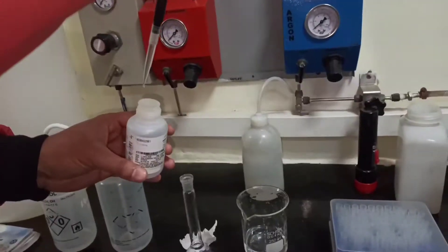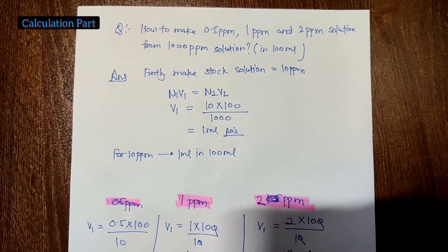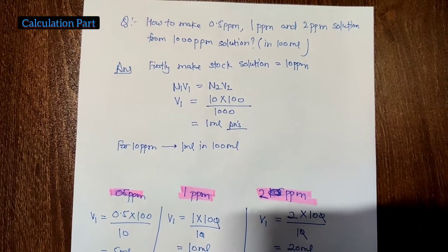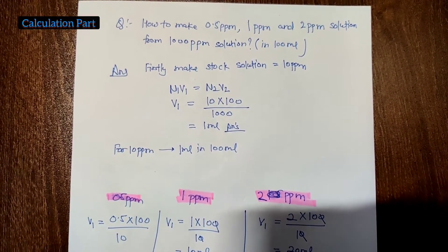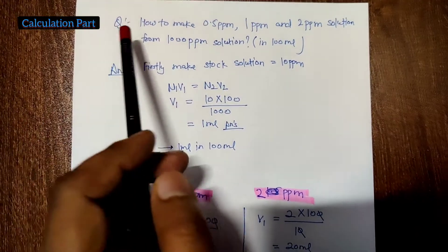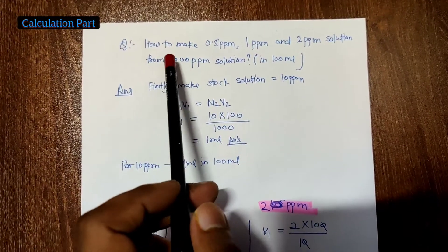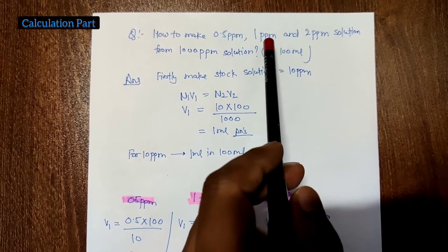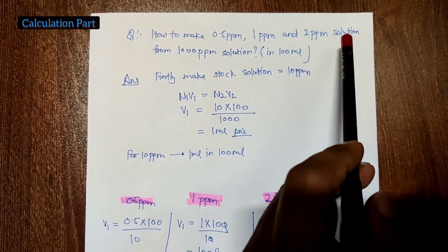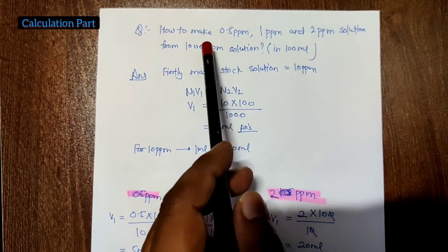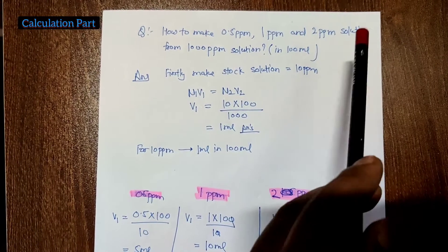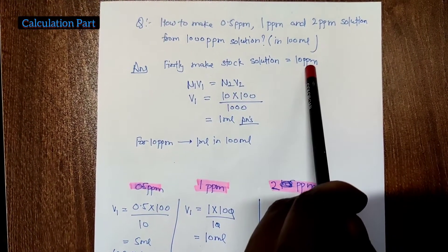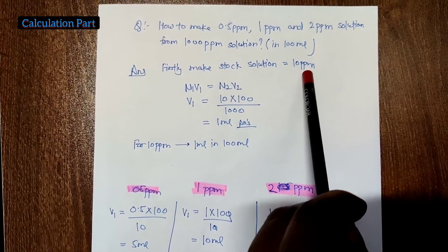Here is our question: how to make 0.5, 1, and 2 ppm solutions from a 1000 ppm solution in 100 ml. We will prepare all these standard solutions in 100 ml, so it is very important to know the concentration at which we will prepare the standard solution. Now we will move to the calculation part.